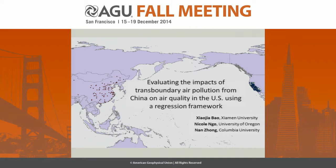Hi, thank you for staying so late. The title of my project is Evaluating the Impacts of Transboundary Air Pollution from China to the U.S. Using a Regression Framework. I'm Nicole Ngo from the University of Oregon, and this is co-authored work with Xiaojiao Bao from Xiamen University and Nan Zhang from Columbia University.